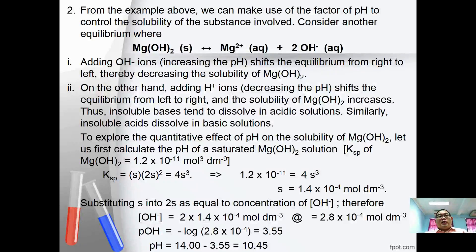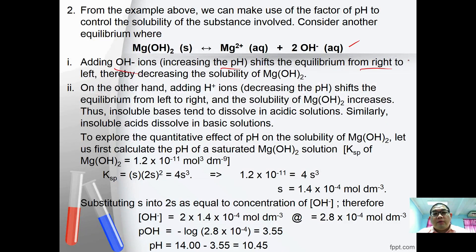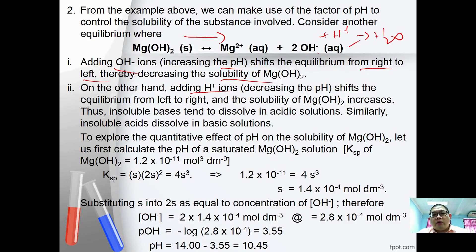We can use pH to control the solubility of a substance. Consider: Mg(OH)₂ ⇌ Mg²⁺ + 2OH⁻. Adding OH⁻ (increasing pH) shifts equilibrium to the left, decreasing solubility of Mg(OH)₂. On the other hand, adding H⁺ (decreasing pH) causes OH⁻ to react with H⁺ to form H₂O, decreasing [OH⁻] and shifting equilibrium to the right, increasing solubility.